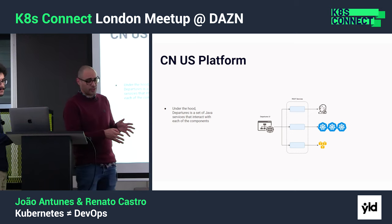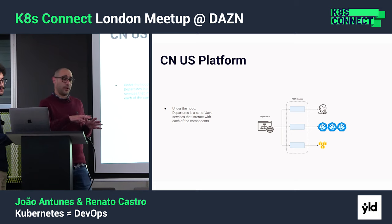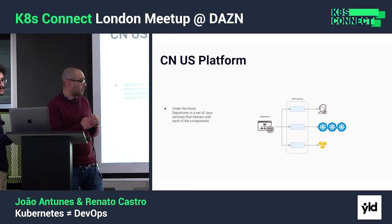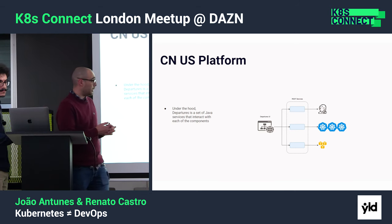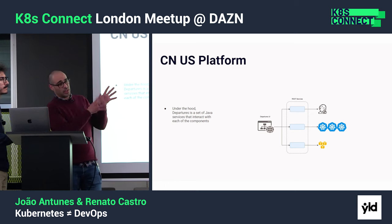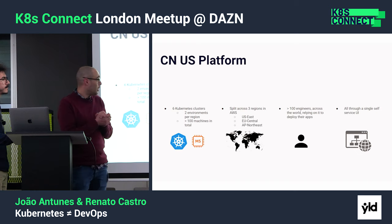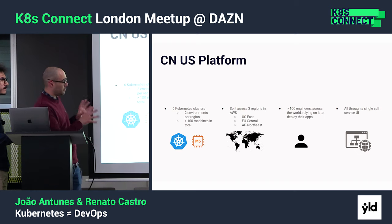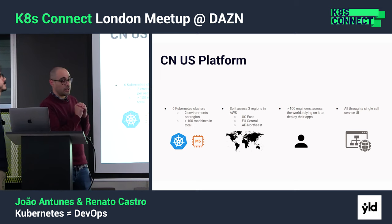They start by talking with a Jenkins instance that creates their builds. Once those builds are green, they will move in the system and interact with the deployment on Kubernetes. Once that's done, it will create the DNS records on AWS. All of this is managed by some pipelines that are in AWS.